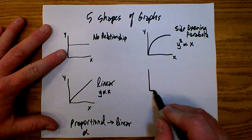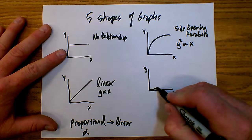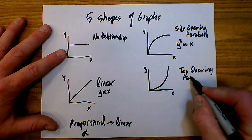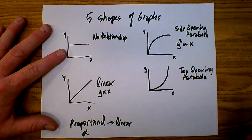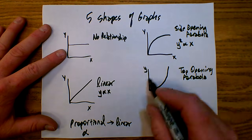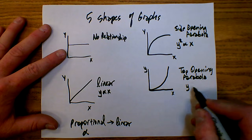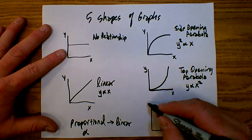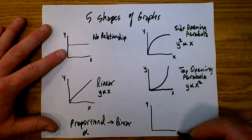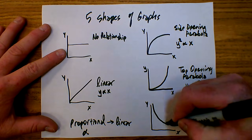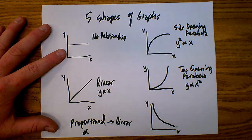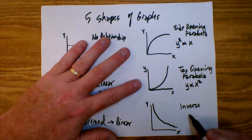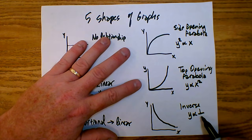The next type of graph we might encounter in physics I call a top-opening parabola. The relationship when we have a top-opening parabola: as x gets bigger, y gets bigger but at an increasing rate. The relationship here is y is proportional to x squared. And finally, the last type of graph is the inverse graph. As x gets bigger, y gets smaller, so y is proportional to the inverse or the reciprocal of x.